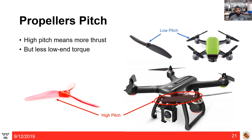Pitch refers to the angle of each blade on the propeller. High pitch results in more overall thrust and top-end speed but less low-end torque — like driving a car only in fifth gear. A high-pitch propeller responds slowly to inputs, uses more power, but is efficient at high speeds. A low-pitch propeller responds quickly, uses less power, but is only efficient at low speeds — like driving in first or second gear. Low-pitch propellers are generally used on smaller quadrotors; high-pitch on larger ones.